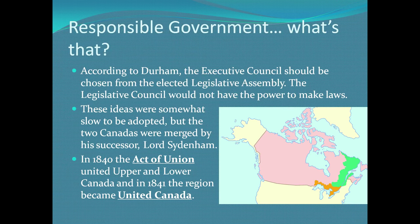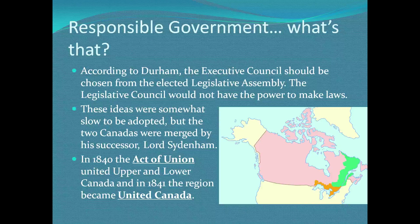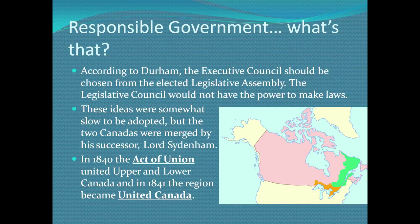What is responsible government? According to Lord Durham, the executive council needs to be chosen from the elected legislative assembly. Everyone votes to appoint the legislative assembly, and then the executive council would come from that assembly — the best people already chosen by voters. The legislative council would still be appointed, but would no longer have the power to make laws. So the only people making laws and key decisions would be those voted for by Canadians — a much more democratic system than what existed before.